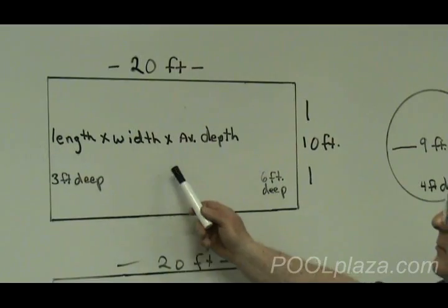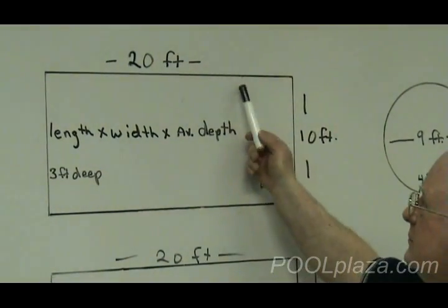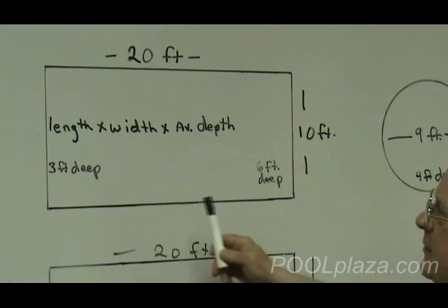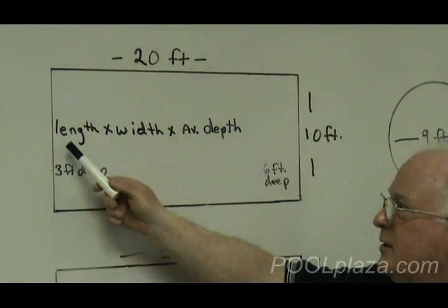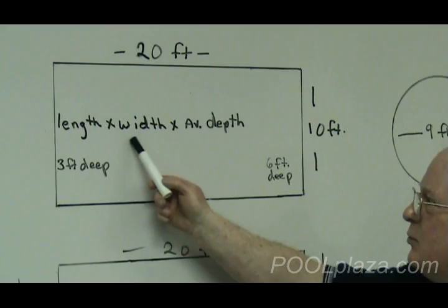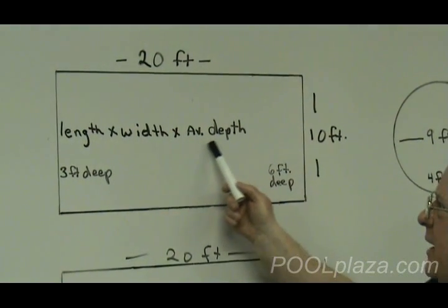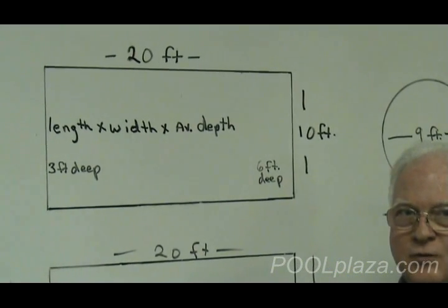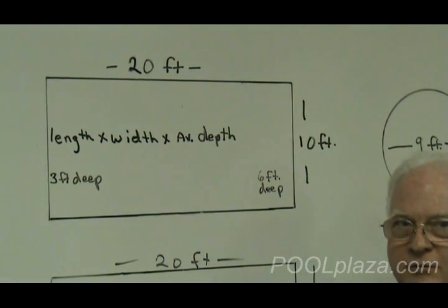This particular pool, 20 feet long, 10 feet wide, the formula for figuring the volume is the length times the width times the average depth times the number of gallons of water in a cubic foot.